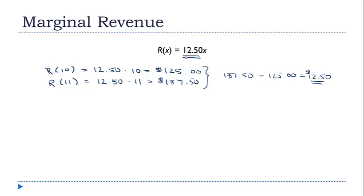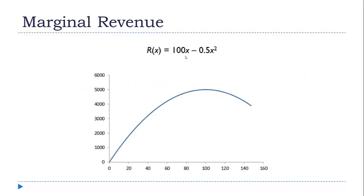Let's take a look at a more complicated concept. I have a new revenue function here. Now the revenue is equal to 100x minus 0.5x². And I've graphed that here so you can see visually what's going on. This revenue function is a quadratic equation. The A term is negative, so you expect the graph to be a parabola opening down, which is what we have here.